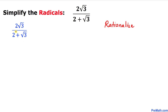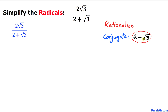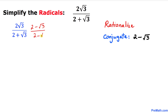Let's focus on the denominator: 2 plus square root of 3. Its conjugate is going to be 2 minus square root of 3 — we simply switch the positive sign to a negative sign. We are going to multiply and divide by its conjugate, which is 2 minus square root of 3 divided by 2 minus square root of 3.